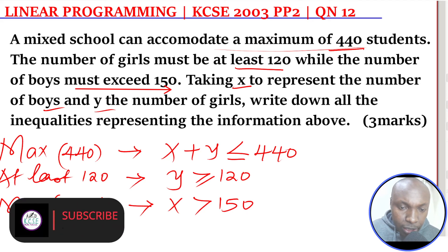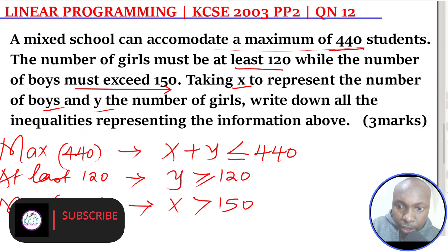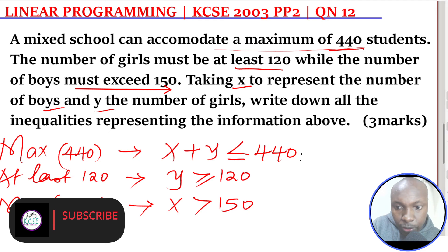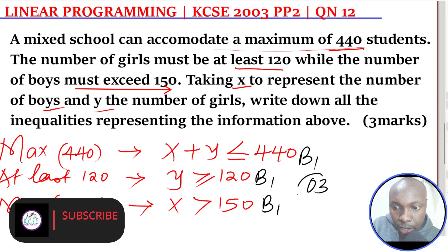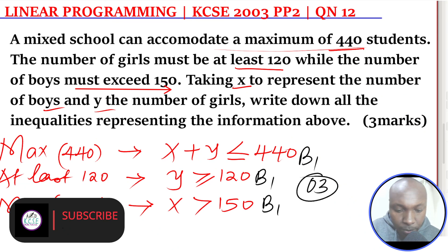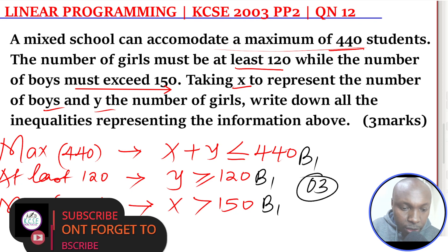By carefully going through the statements and forming all the inequalities, there are supposed to be three inequalities. You get a mark for the first one, a mark for the second, and a mark for the third — so you get three marks in total. Thank you so much.